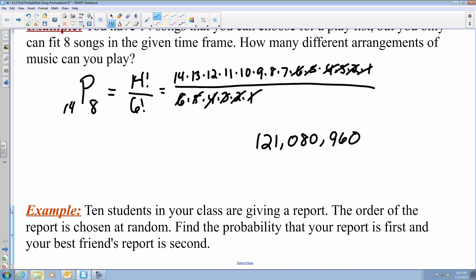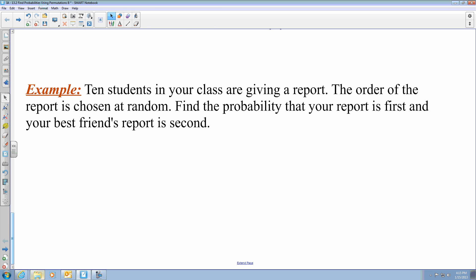This example deals with finding permutations with probability. And first off, we have 10 students in your class that are given a report. The order of the report is chosen at random. We want to find the probability that your report is first and your best friend's report is second.